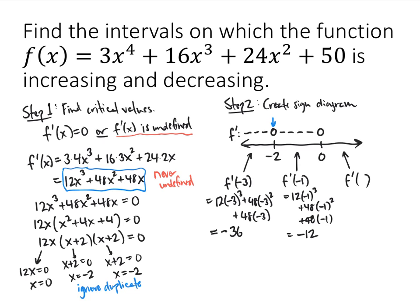So maybe f prime changes sign at x equals 0. To test it, I pick an x value greater than 0 — let's try x equals 2. Plugging in: 12 times 2 cubed plus 48 times 2 squared plus 48 times 2 gives 384. The important thing is that 384 is positive. So f prime did change sign at x equals 0 — it changed from negative to positive.